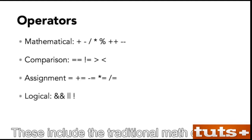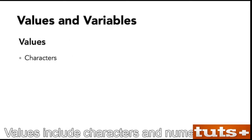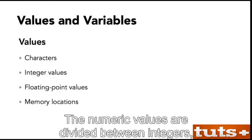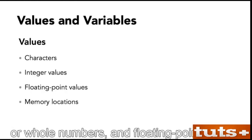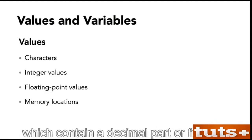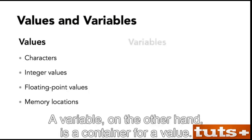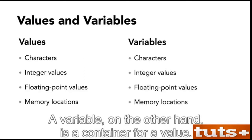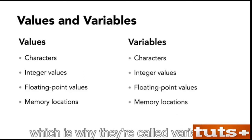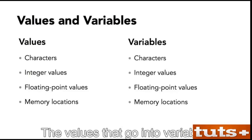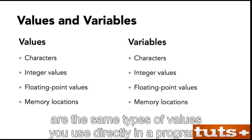Operators are symbols used to manipulate data in the program. These include the traditional math operators, as well as a host of other special symbols. Values and variables are similar. Values include characters and numeric values. The numeric values are divided between integers, or whole numbers, and floating point values, which contain a decimal part or fraction, or which can be very large or very small values. A variable is a container for a value. Its contents can change, or vary, which is why they're called variables.